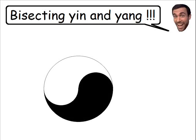Welcome to the solution of bisecting yin and yang. In this problem we need to bisect both yin and yang using a straight line, but first let me give you an idea of how we could solve this problem using a curved line.